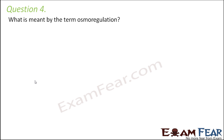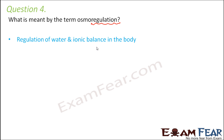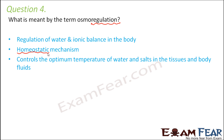Question number 4: what is meant by the term osmoregulation? Regulation means to control something, and osmo is derived from osmosis. It basically talks about controlling the balance of water and ions — regulation of water and ionic balance in the body, so that neither excess water nor too many ions are present. This is a homeostatic mechanism, meaning everything is maintained in a stable, desired state. Osmoregulation controls the optimum balance of water and salts in tissues and body fluids.